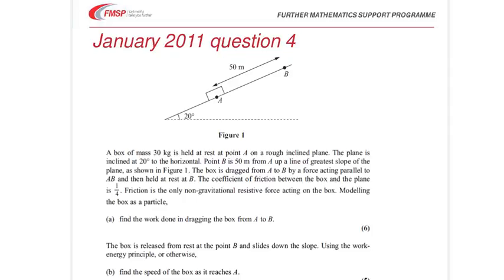The coefficient of friction is a quarter, so mu is 0.25. Friction will be equal to mu R because it's sliding, it's been dragged up the plane. So friction will be 0.25 R.